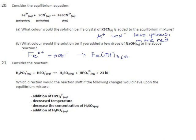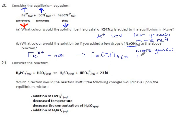Adding NaOH has the effect of pulling iron out of the solution. What will the system do about that? It'll try to replace the iron. Incidentally, it will also make SCN⁻, and it will do that by breaking down the product. So we'll gain iron, we'll gain SCN⁻, and we'll lose FeSCN²⁺. That means the yellow color will increase and the red will decrease — this will turn more yellow, less red.